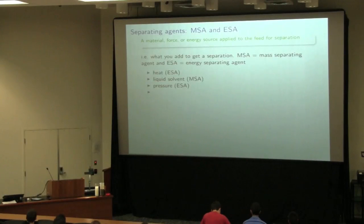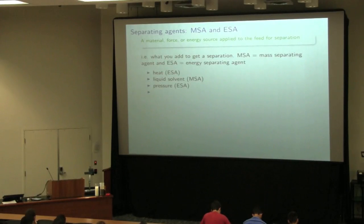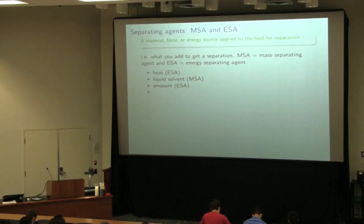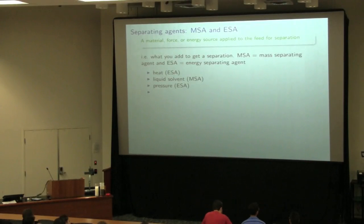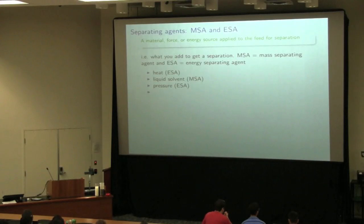Two other terms we need are mass-separating agent and energy-separating agent. Separation processes exist because we're trying to counteract the second law of thermodynamics, which indicates that things tend toward high entropy — separations are not going to happen on their own. We need to add energy or mass to create that separation. Heat is a very common energy-separating agent used in distillation. Liquid solvents are a mass-separating agent used in solvent extraction or liquid-liquid extraction. Pressure is another energy-separating agent.